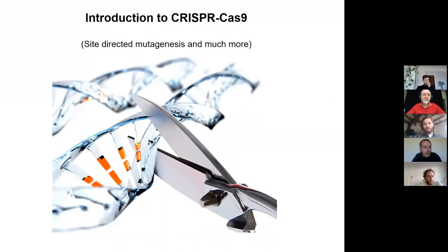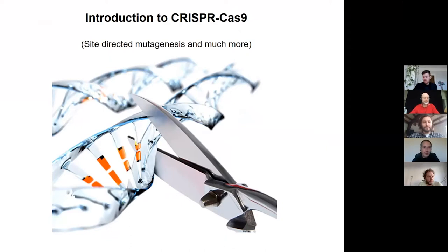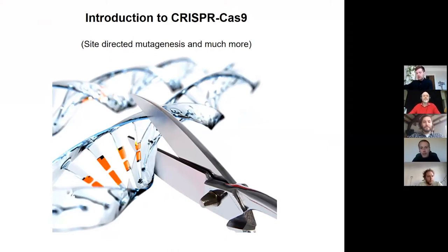This is a very short introduction on CRISPR-Cas9 mutagenesis system. This is a site-directed mutagenesis system, meaning that we can target a specific region of our genome to mutate. That's what we are using this technique for right now.